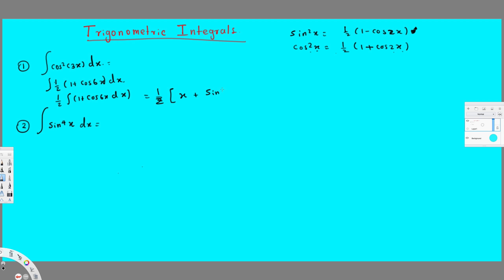If I integrate this, it's going to be half times [x + sin6x divided by 6] plus constant. All you have to do is multiply by half, which gives us (x/2) + sin6x/12 + C. And that is the answer for this question.